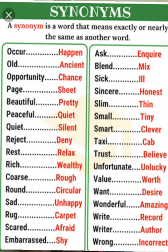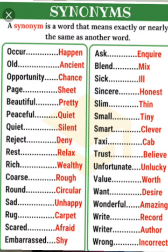As you can see at the top, something is written about synonym. Let's read it out: a synonym is a word that means exactly or nearly the same as another word. So both words will have either similar meaning or nearby meanings. The first word is occur — O-C-C-U-R — occur means happen.